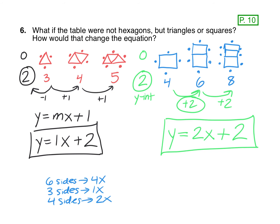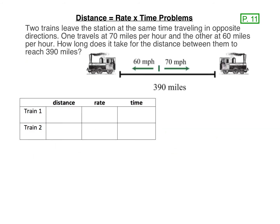Now that we've completed our hexagon table problem, we're going to end this lesson by looking at one final type of problem — a distance equals rate times time problem. You've likely seen the formula distance equals rate times time before, probably in your physical science class as well. We can use this formula to set up some equations and solve some problems. Let's look at this first example: two trains leave the station at the same time, traveling in opposite directions. One travels at 70 miles per hour and the other travels at 60 miles per hour. How long does it take for the distance between them to reach 390 miles?